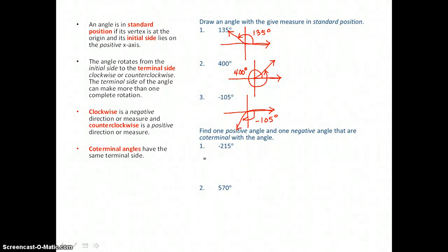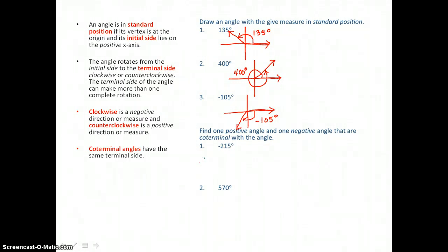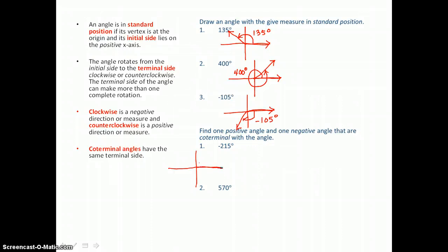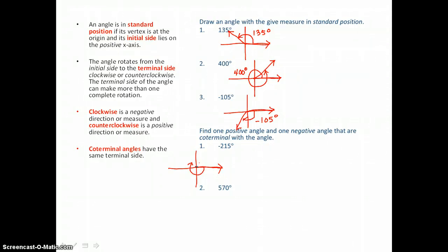In the next problem we want to find one positive angle and one negative angle that are coterminal with the given angle. Coterminal angles have the same terminal side, so we'll start by drawing this negative 215 degree angle. I start on the positive x-axis and rotate in the negative direction, 180 degrees and 35 degrees more, so the terminal side stops in the second quadrant.